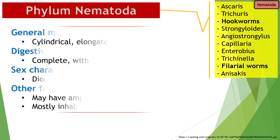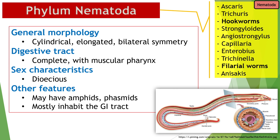They have a complete digestive tract, meaning they have a mouth, intestines, and anus. There are distinct male and female worms, with males having testes, while females have ovaries and uterus. Roundworms also have sensory organs called amphids or phasmids, depending on where they are located within the worm. Most nematodes inhabit the gastrointestinal tract as adults, but some reside in the blood and other tissues, where they can steal nutrients from their host using their well-developed digestive tract.